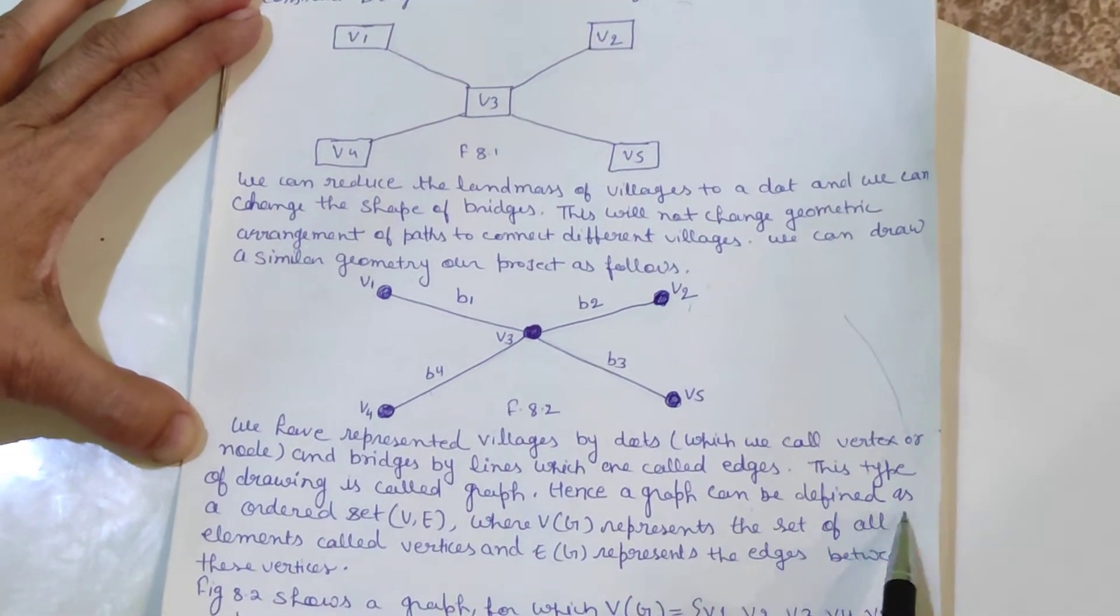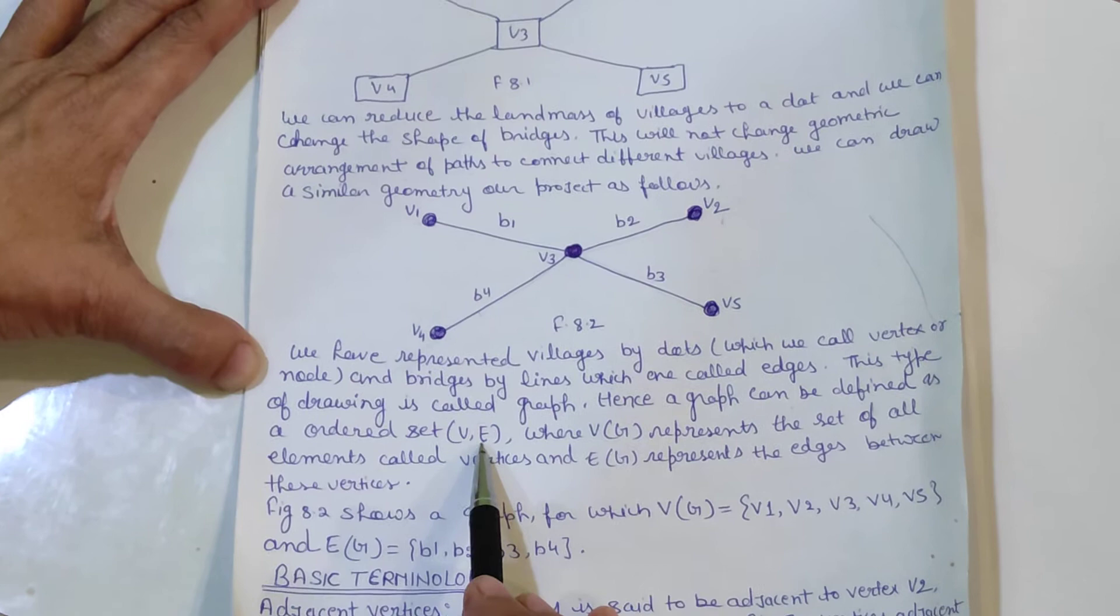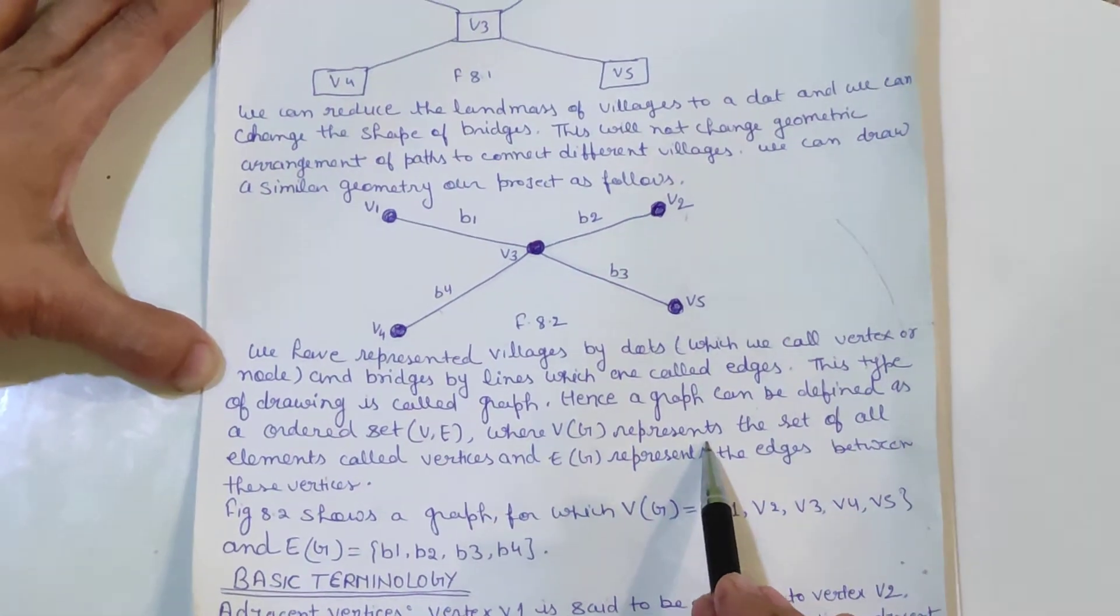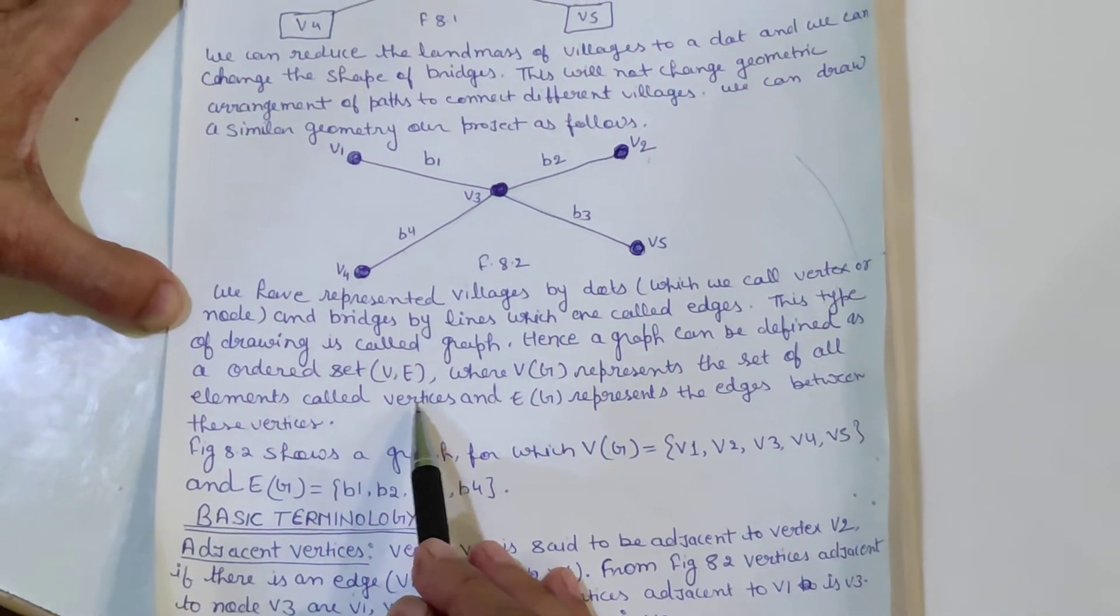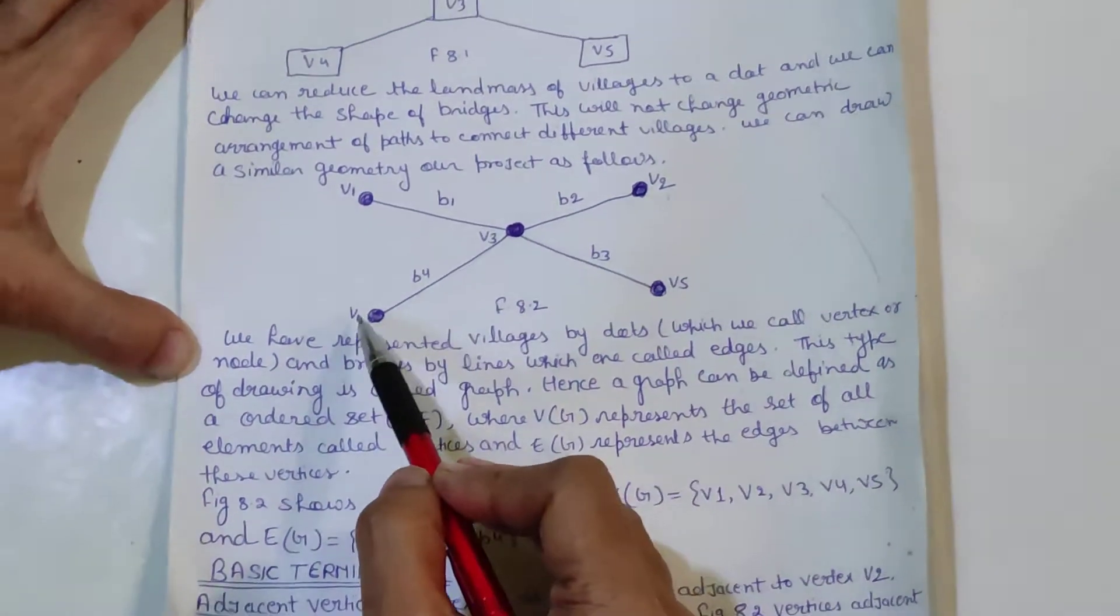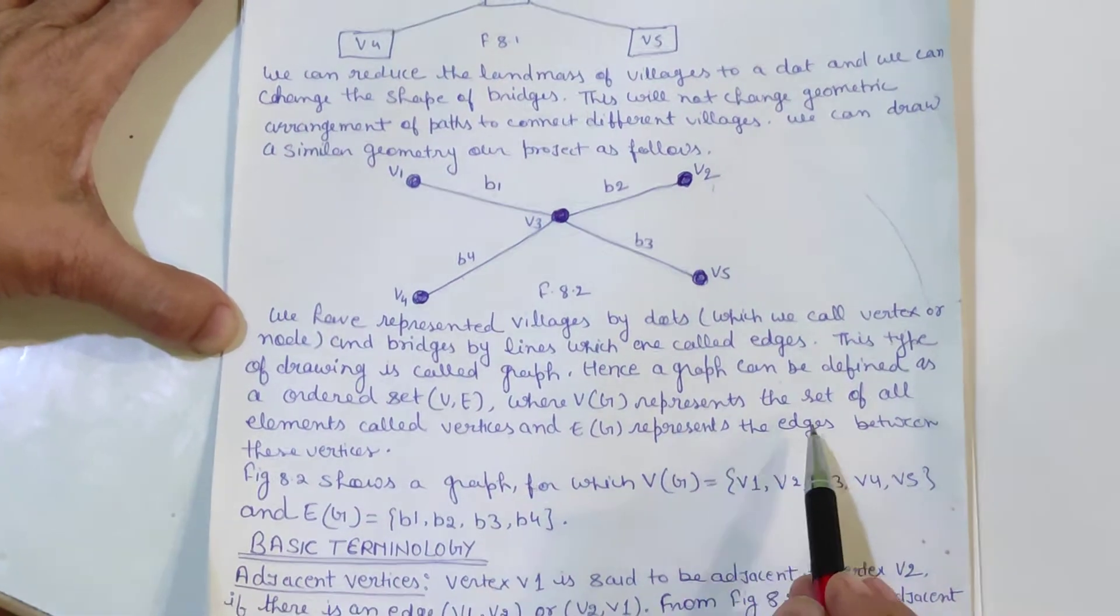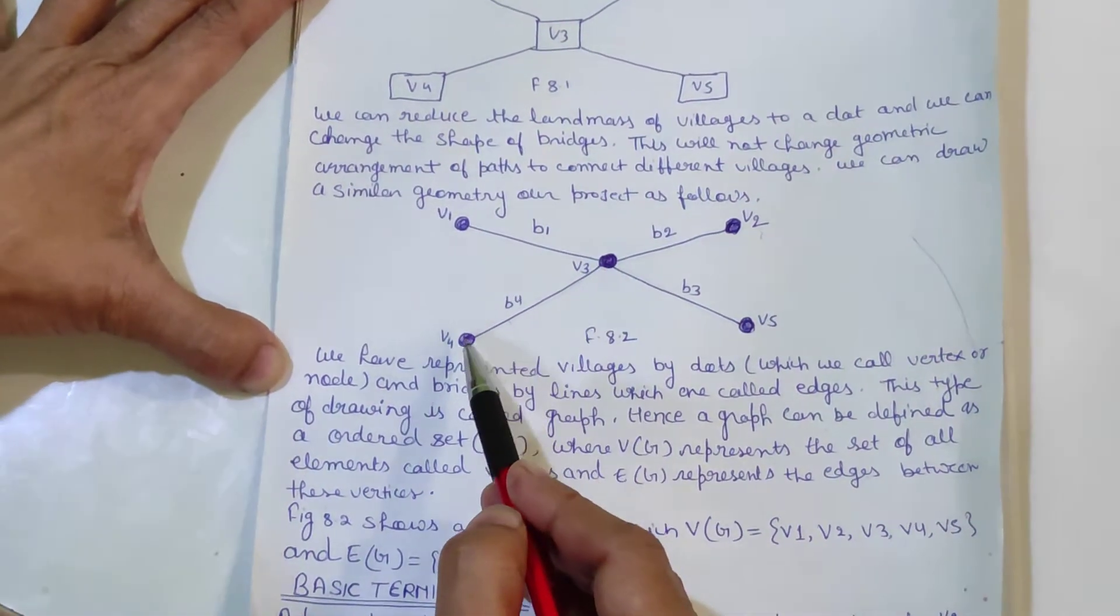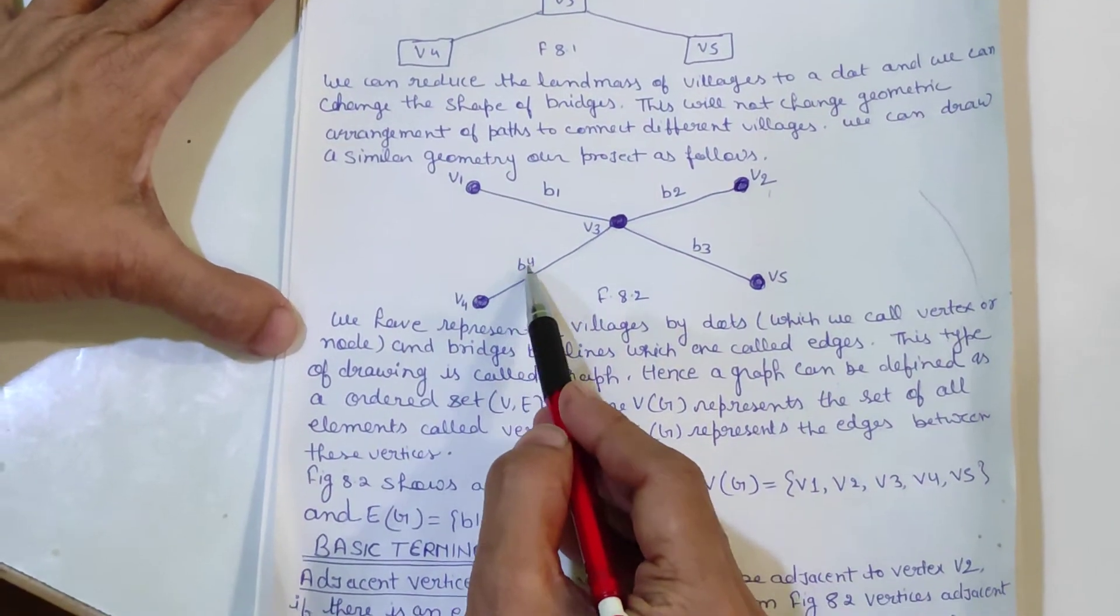Graph can be defined as an ordered set VE, where V represents the set of all elements called vertices, and E represents the edges between these vertices, shown as lines.